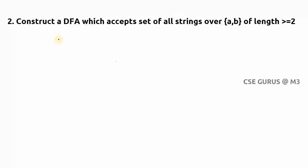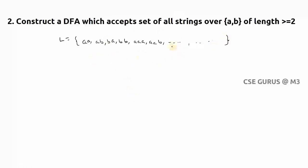First I am writing the language consisting of strings of at least length two. So first I write the strings with length two, then length three, then length four, and so on up to infinity. All these strings belong to this condition.